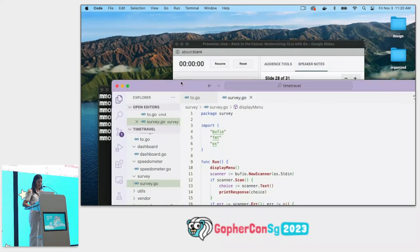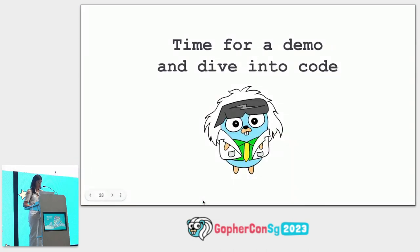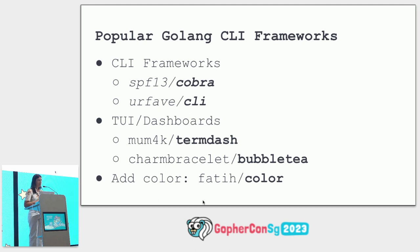To build this CLI, I used a couple of frameworks. One is the Cobra framework — that's the gold standard for building fancy CLIs. If that's not your cup of tea, you can use your-fav-cli. For anything simple, you can also just use whatever's in the standard package. For the dashboard, I used mum4k/termdash, which I love for its simplicity — it was really easy to use and you can add styling. I highly recommend it. Alternatively, there's Charm Bracelet Bubble Tea. To add some color, I recommend using Fatih Color.